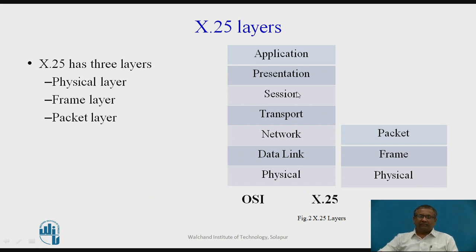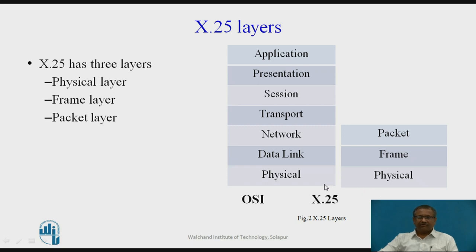Here we are going to study the X.25 layers. This is a standard OSI model which consists of 7 layers. In X.25, only 3 layers are implemented, and the names given to those are physical, frame, and packet. So X.25 has 3 layers: physical layer, frame layer, and packet layer.